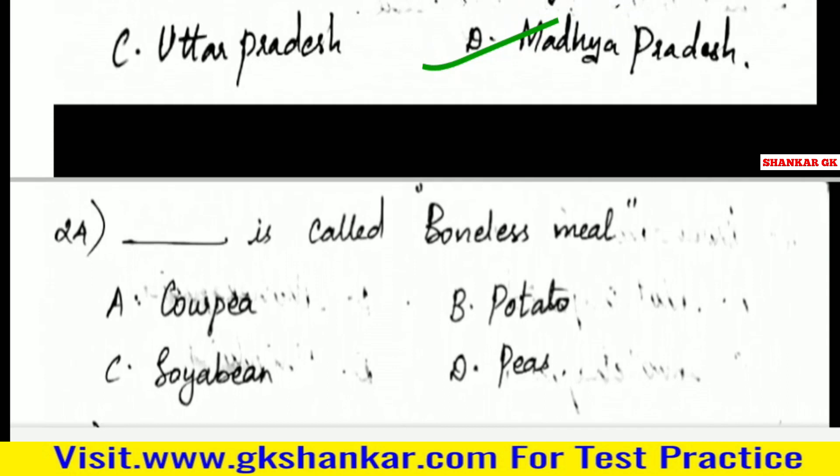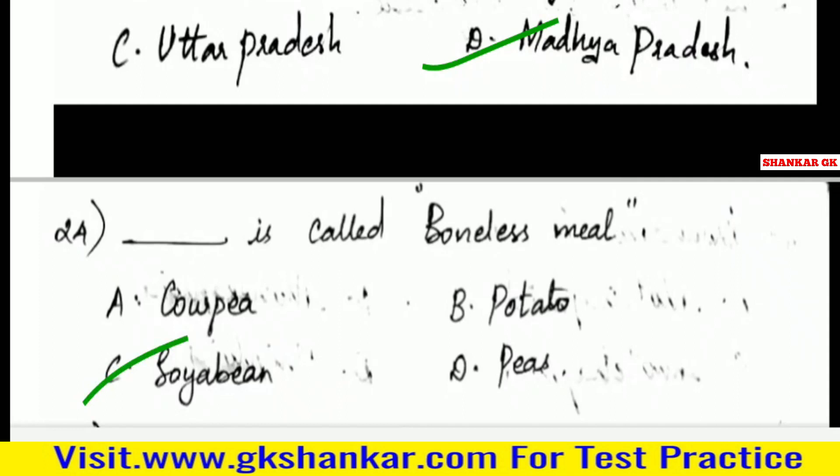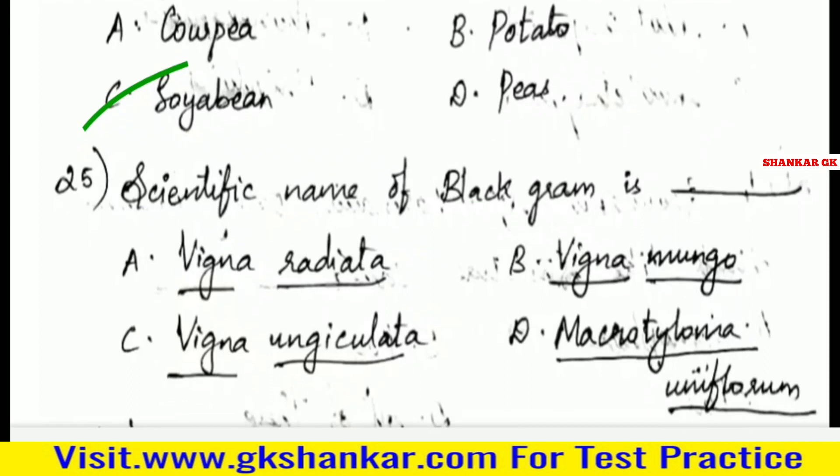Twenty-fourth question: Dash is called boneless meal — A. Cowpea, B. Potato, C. Soyabean, D. Peas. Answer: C. Soyabean — boneless meal.